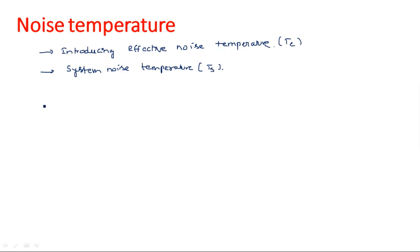What do you mean by noise figure? The noise figure has two definitions, which I introduced in the previous video. First, noise figure is defined as the ratio of signal-to-noise ratio of the input divided by signal-to-noise ratio of the output. Second, noise figure is defined as the ratio of noise out of a practical receiver to the noise out of an ideal receiver.